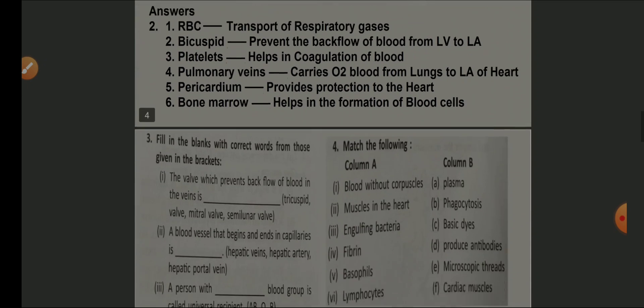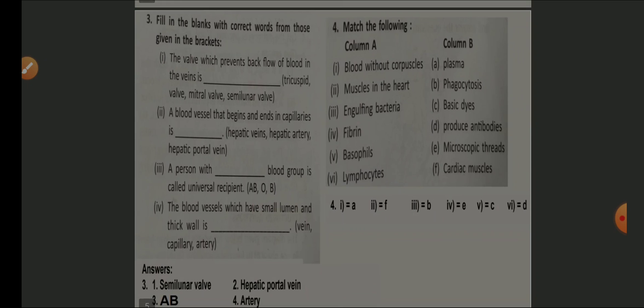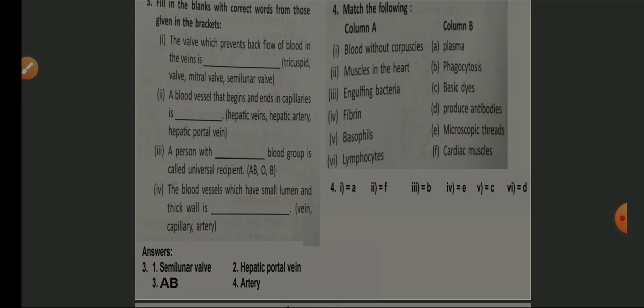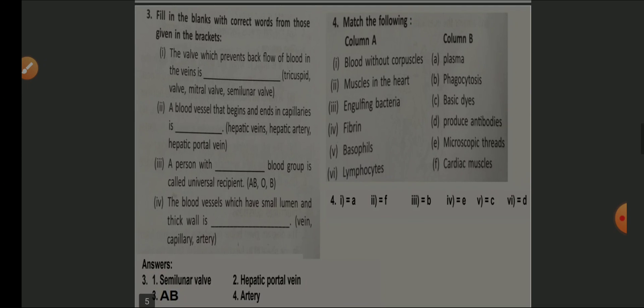Question number three, fill in the blanks: The valve which prevents backflow of blood in veins — semilunar valve. The blood vessel that begins and ends in a capillary — hepatic portal vein. The person with AB blood group is called — universal recipient. The blood vessel which has small lumen and thick wall — artery.